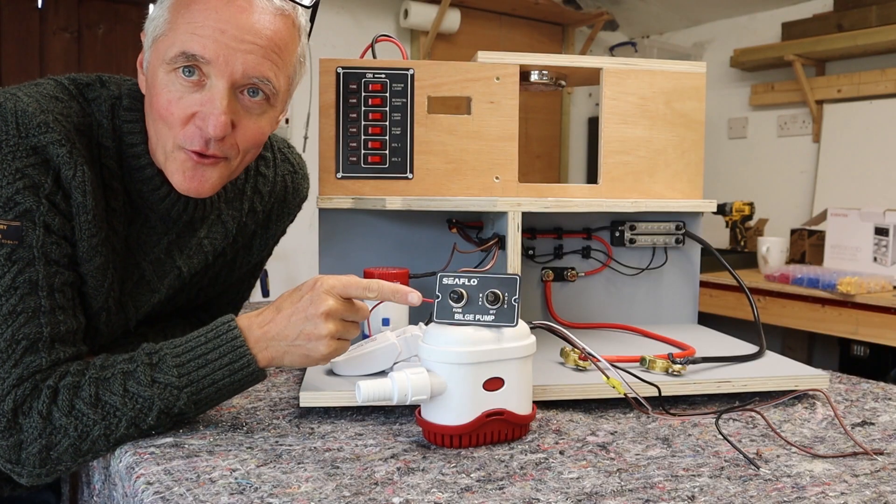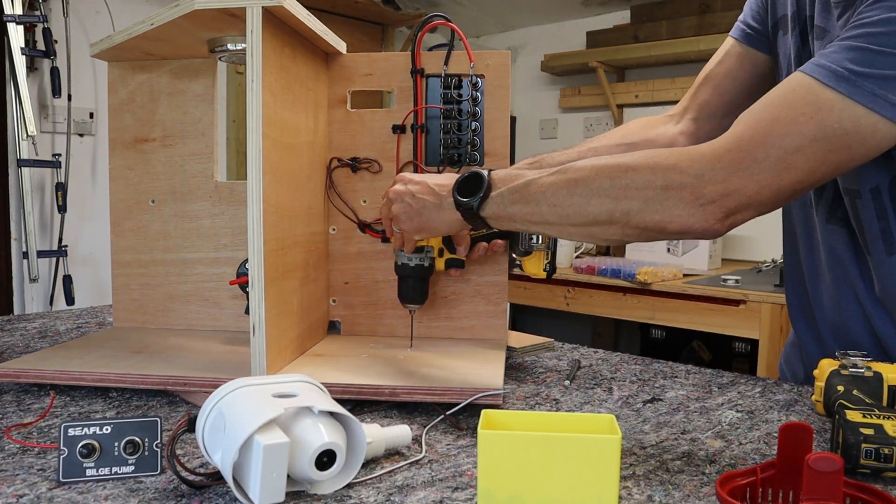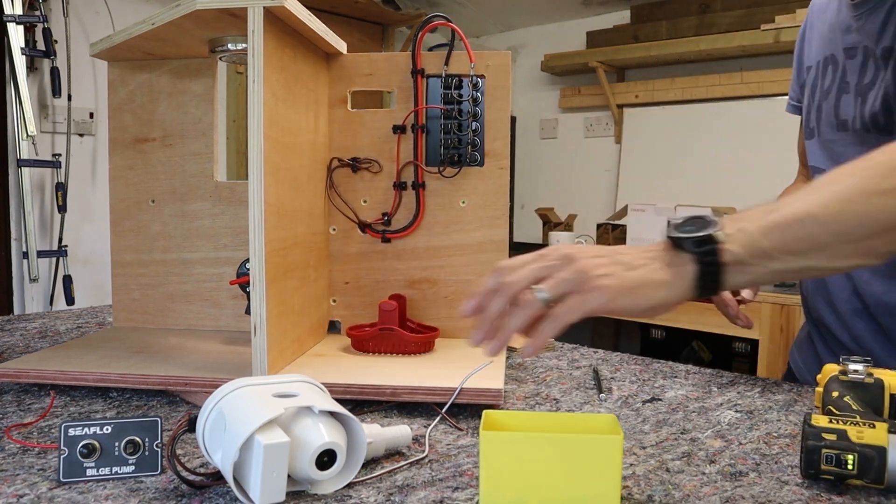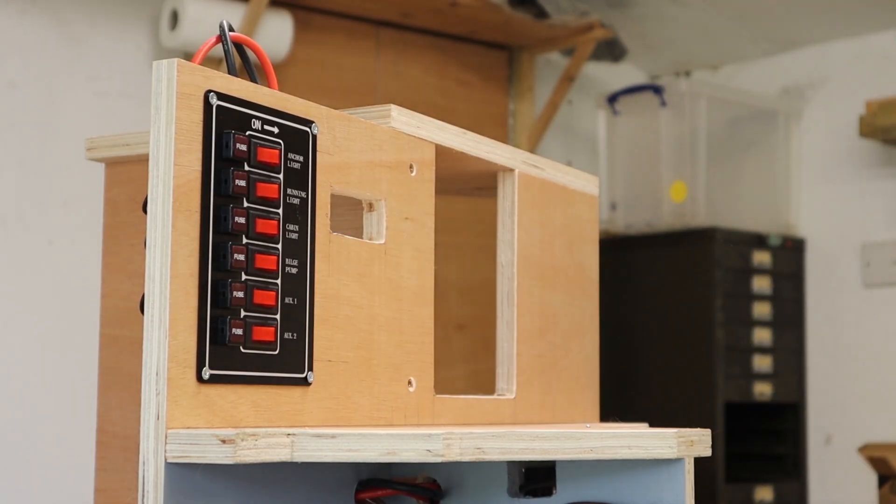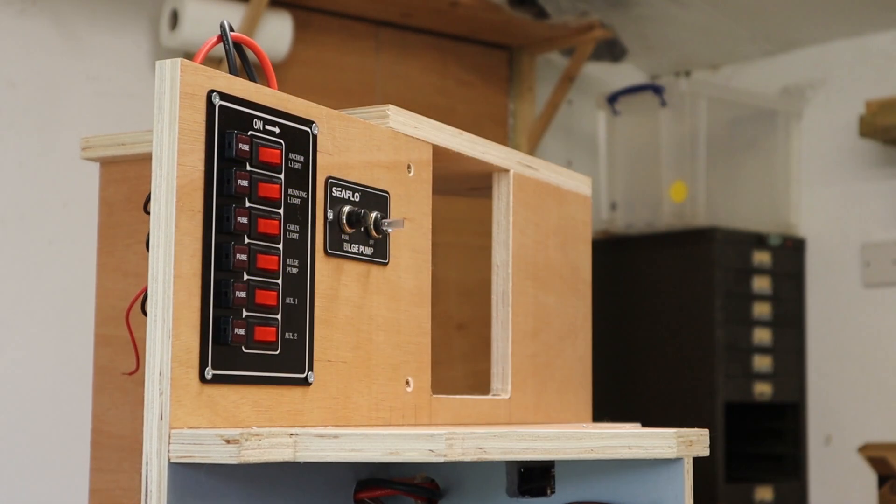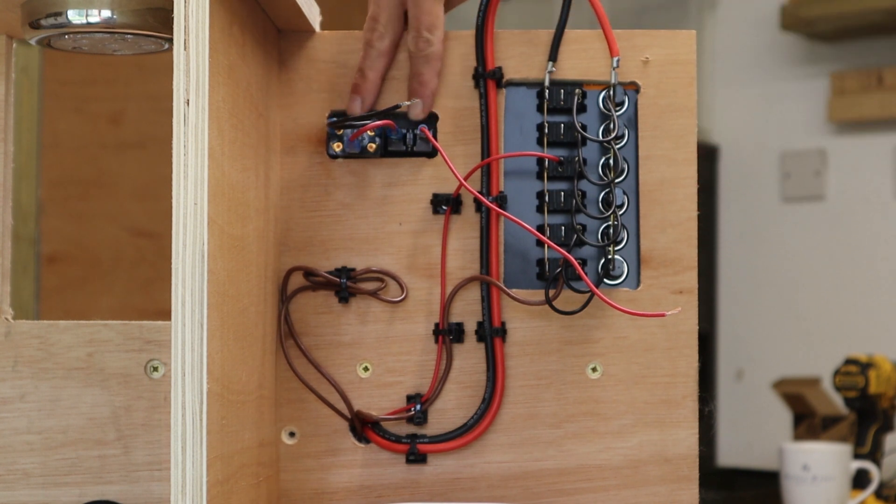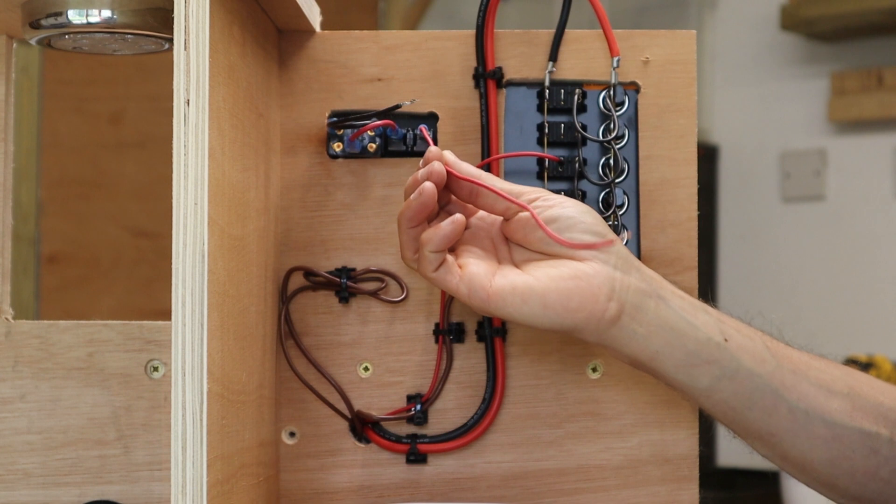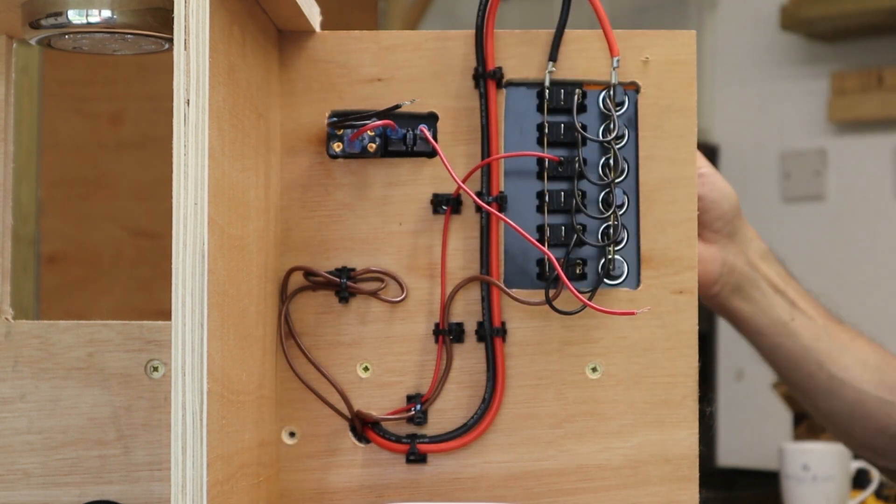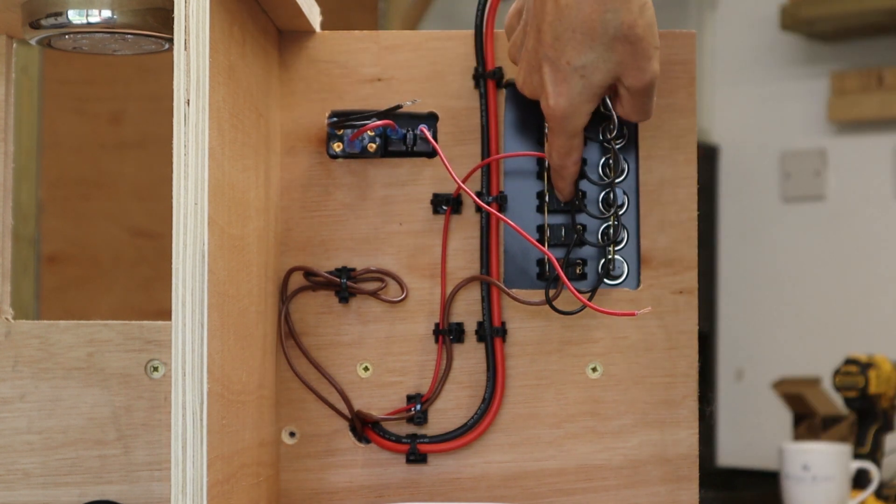So on with installing these bits and getting them wired up. I'm going to start with the feeds which come to the bilge pump switch itself. We've got the positive wire here which is going to come to the switch on the main switch panel, and the bilge pump switch I'm going to use is the fourth one down so it's going to come to this terminal here.